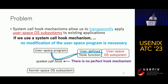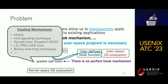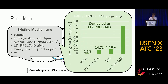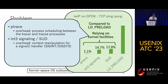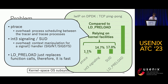About existing approaches: there is no perfect system call hook mechanism. Existing ones include ptrace, signal-based techniques, seccomp user dispatch, and LD_PRELOAD. When we apply AWP on DPDK to an existing application, ptrace, signaling, and SUD cause significant performance reduction, and they rely on kernel features. For example, ptrace has overhead for process scheduling between tracer and tracee processes, and signaling SUD has overhead for context manipulation for the signal handler. On the other hand, LD_PRELOAD just replaces function calls, so it is fast.